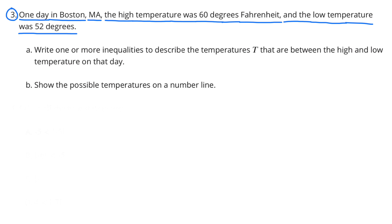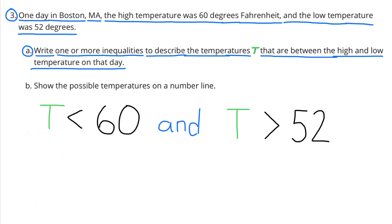Number 3, Part A: Write one or more inequalities to describe the temperatures T that are between the high and the low temperature on that day. We're not going to include the high temperature or the low temperature — only temperatures between them. T is less than 60 and T is greater than 52.